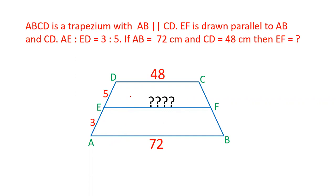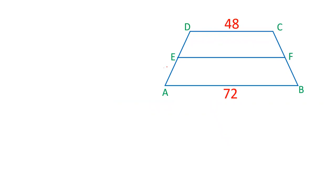EF is drawn parallel to AB and CD. The length of AB is 72, the length of CD is 48, and EF is drawn such that AD is intersected in the ratio of 5 to 3. AE and ED are in the ratio of 3 to 5 and we have to find out the length of EF. Let's see how we can do it. It is given that this is 3 and this is 5.